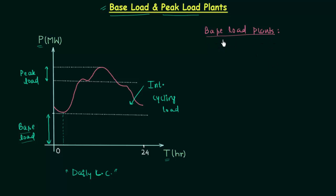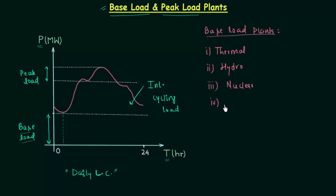Base load plants are the plants which are required to provide power continuously. The types of base load plants are: first, thermal plant; second, hydro plant; third, nuclear power plant; fourth, wind turbines; fifth, solar; and sixth, runoff river. In coming presentations we are going to discuss all of these different plants.